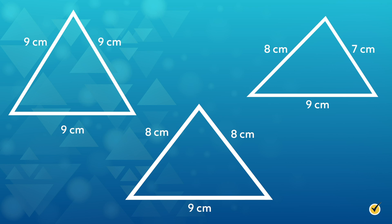Here are three triangles with the lengths of the sides included. In the triangle on the left, we can see that all three sides are the same length and measure 9 cm. A triangle like this one, where all the sides are the same, is called an equilateral triangle.